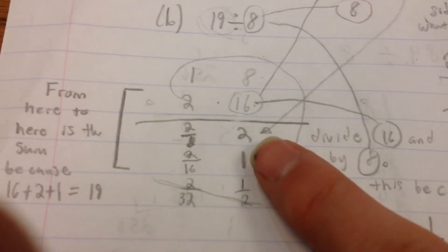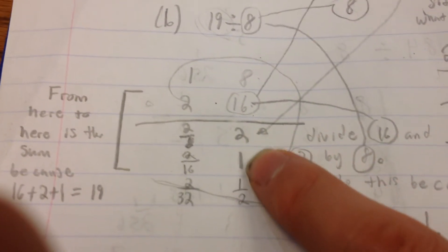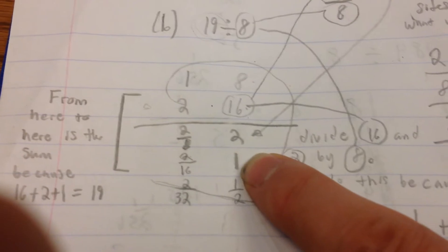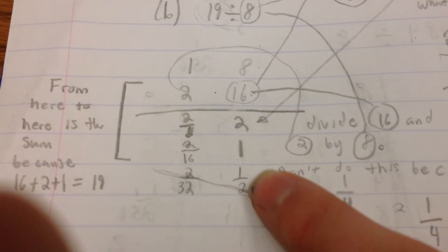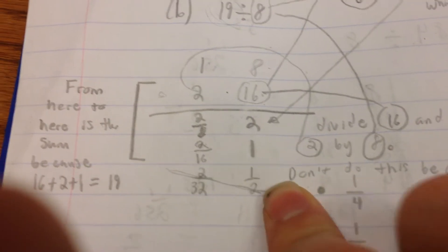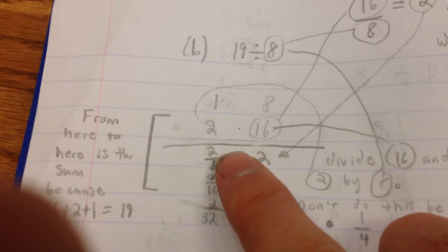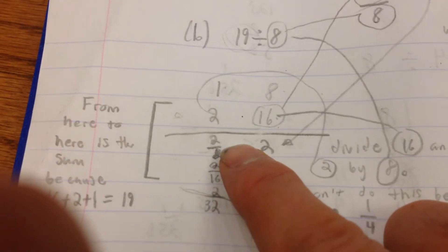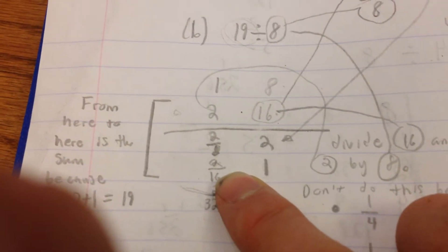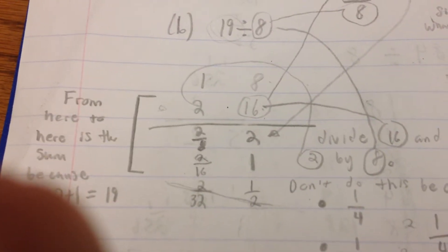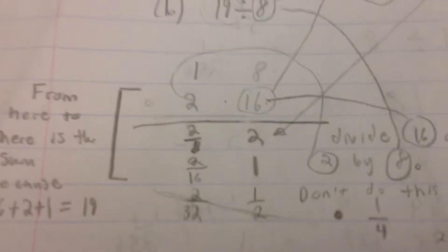So 2 divided by 2 is 1, divided by 2 is 1 half, and then in this one, we have 2 eighths, and then we halve that again, and you get 2 sixteenths.